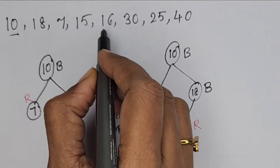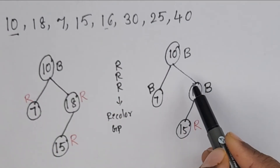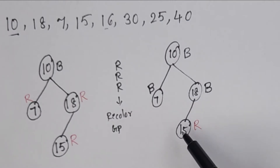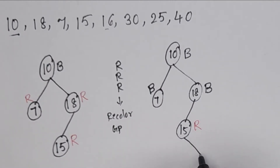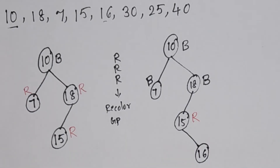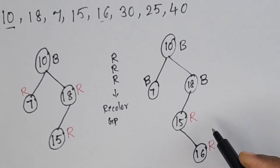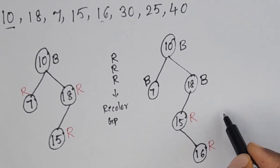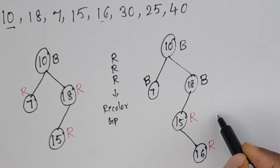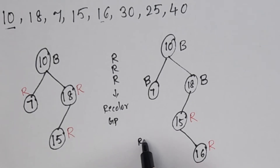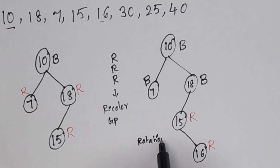After 15, the next element is 16. Since 16 is greater than 10, less than 18, and greater than 15, we insert 16 as the right child of 15, colored red. Again, there is a red-red conflict: parent and child are both red. We check the sibling of 15 — there is no sibling. If the sibling is black or there is no sibling, we perform rotation then recolor.